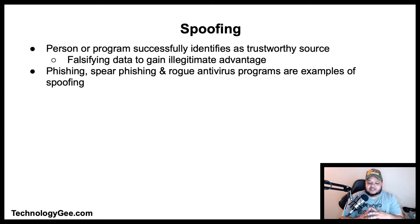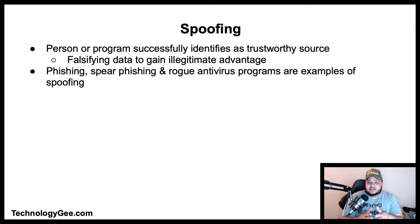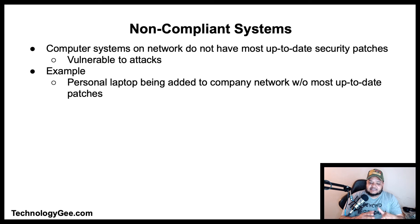Then we have spoofing. Spoofing is a situation in which a person or program successfully identifies as a trustworthy source by falsifying data to gain an illegitimate advantage. Phishing, spear phishing, and rogue antivirus programs are three examples of spoofing.